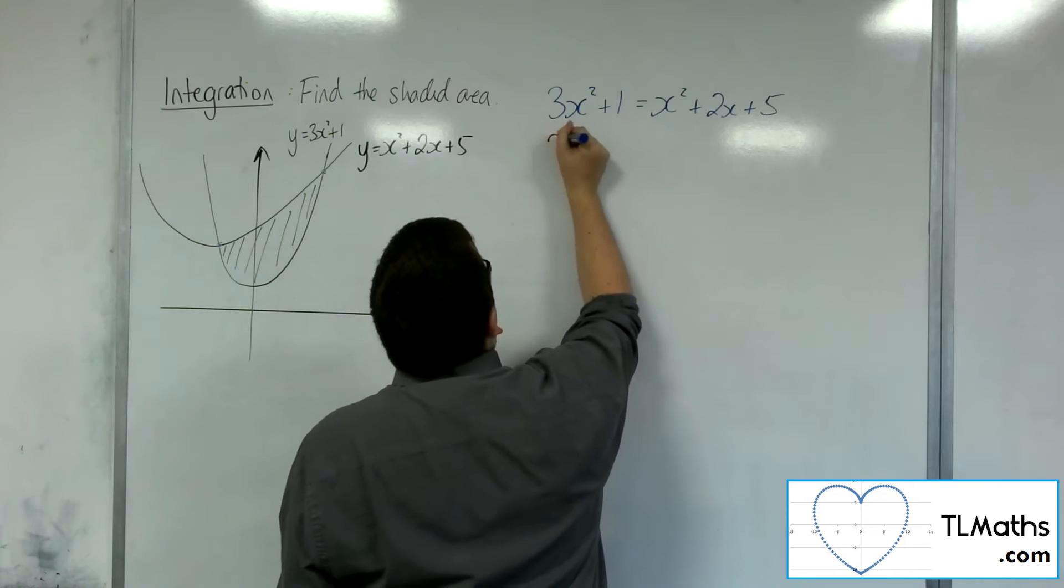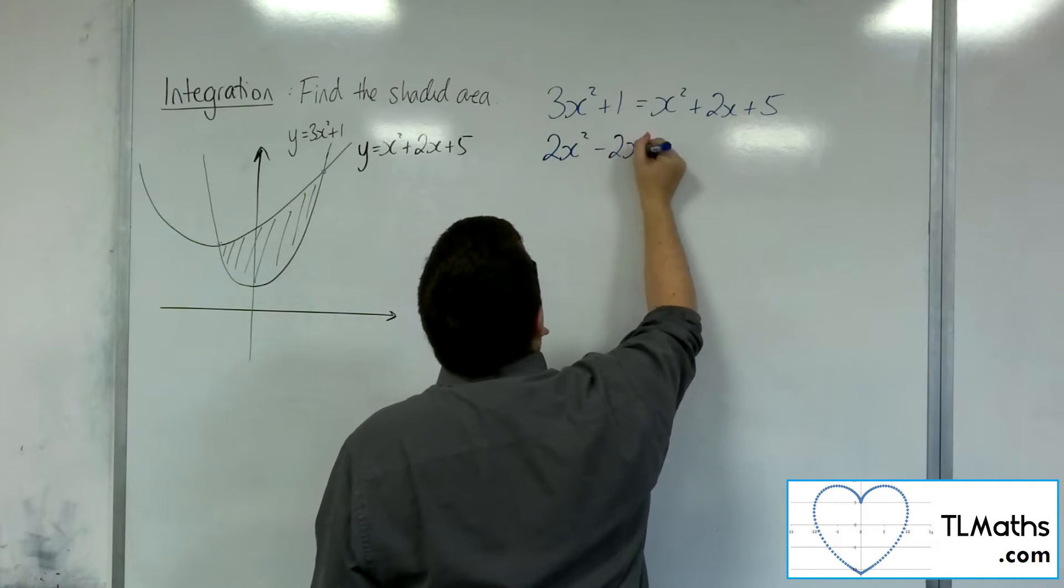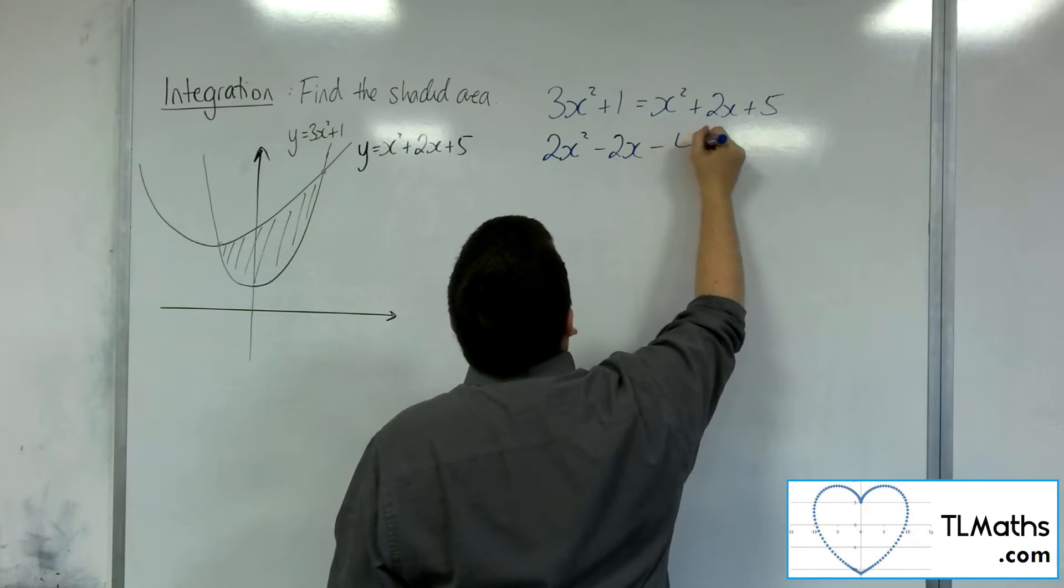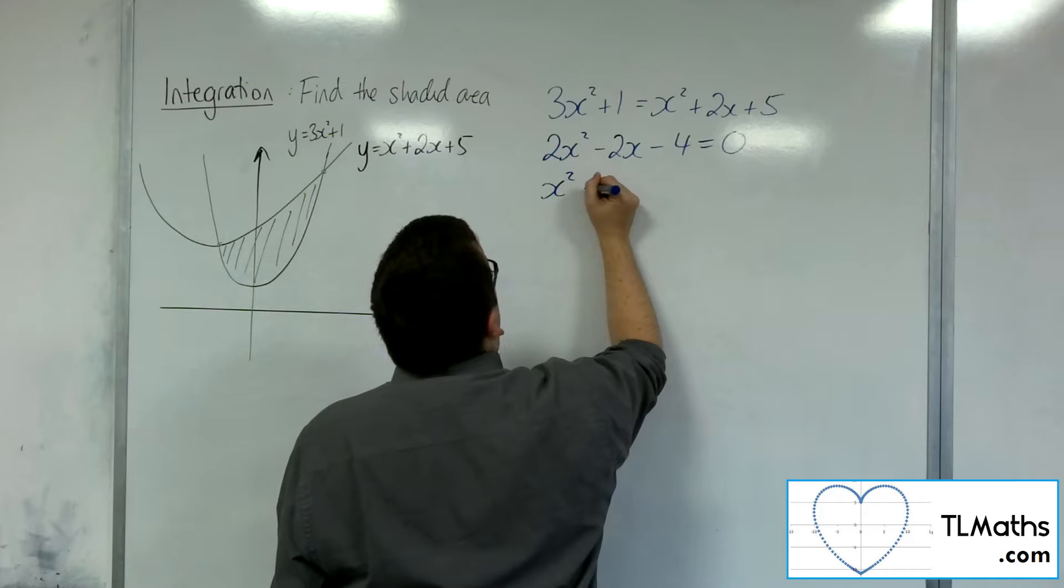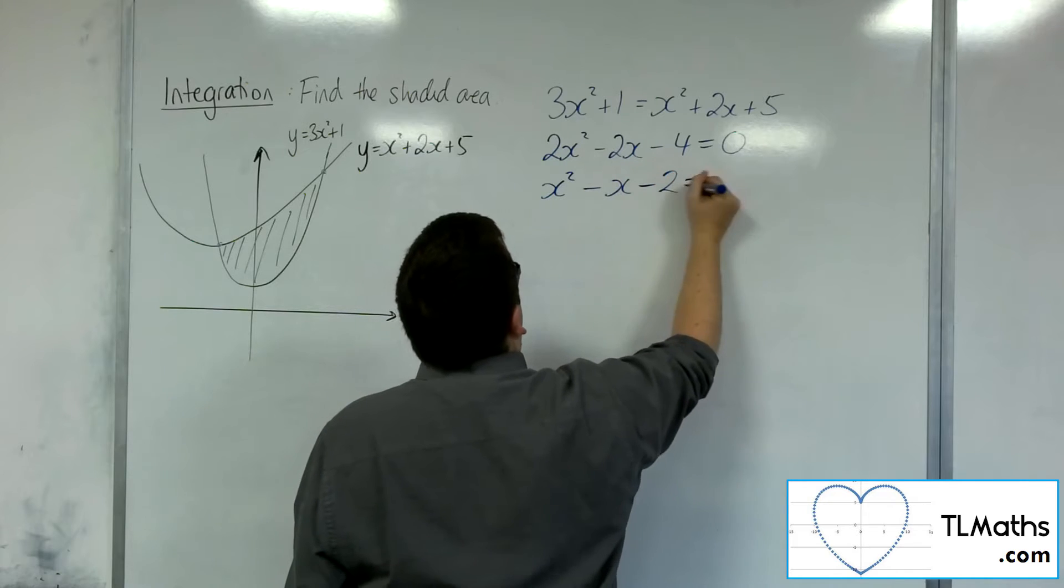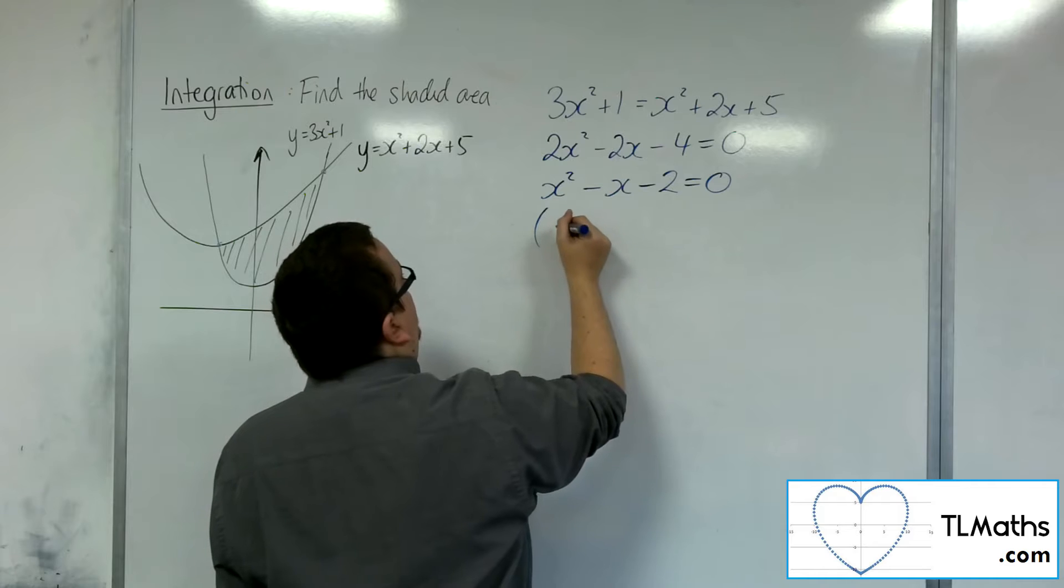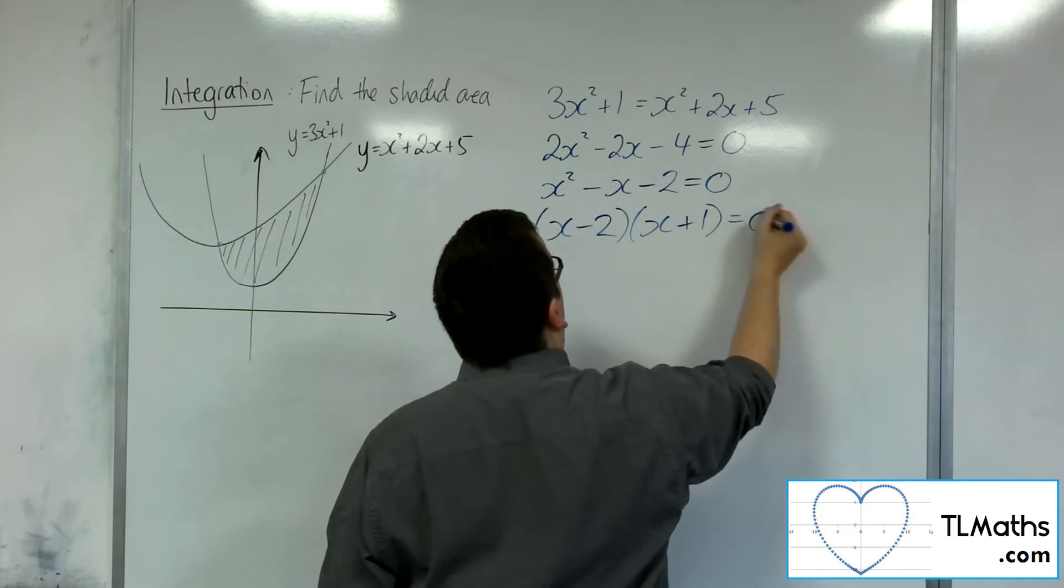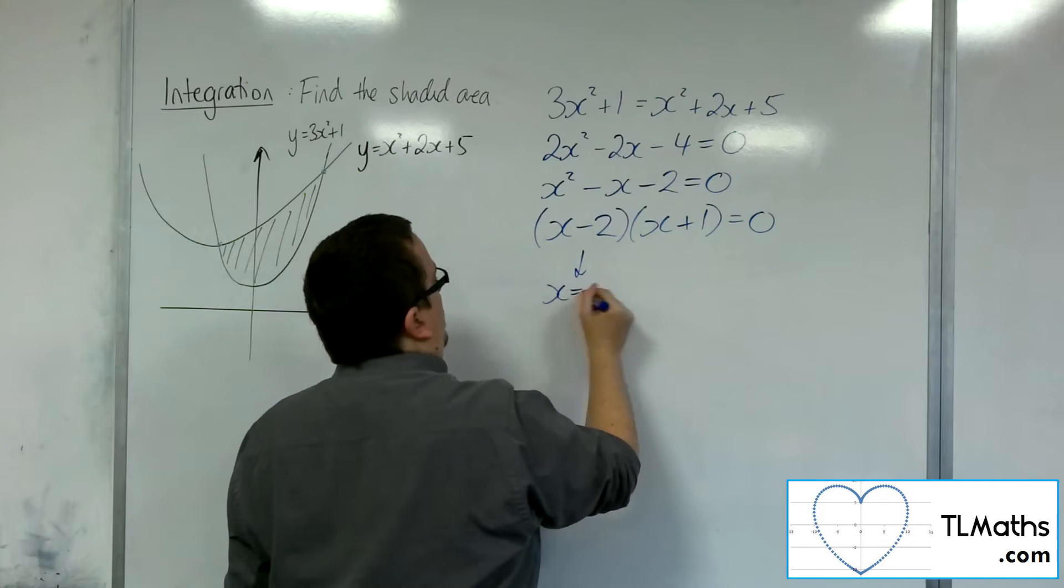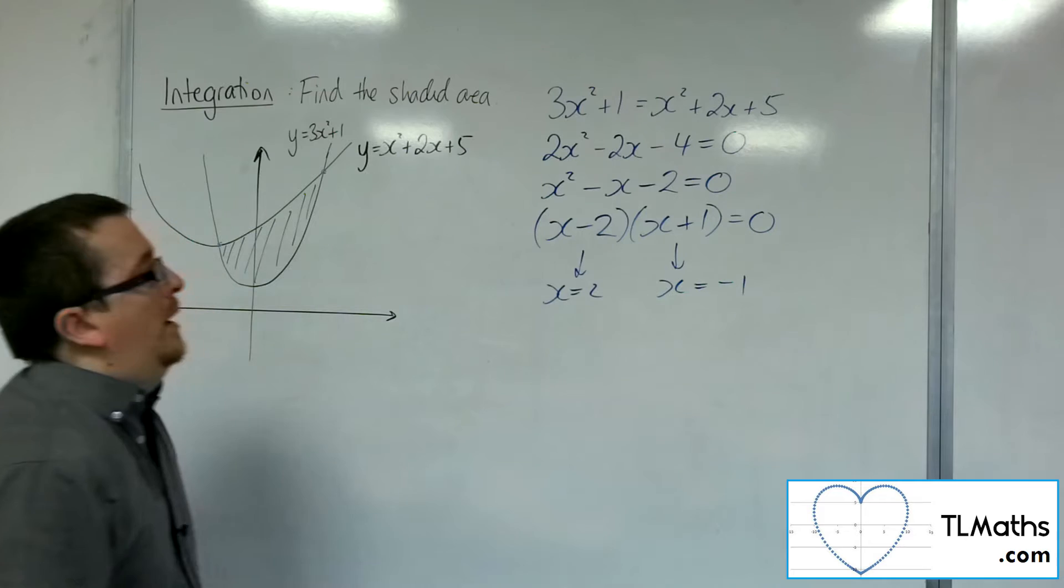So if I subtract the x squared from both sides, let's move everything onto the left actually. So take away 2x, take 5 from both sides, so minus 4 is 0. I can divide through by 2. So now this is a quadratic I should be able to factorise. So we have x minus 2 times x plus 1 is 0. So we've got the two x values there of 2 and minus 1.